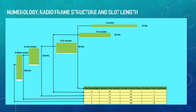The number of symbols per slot will be the same for all numerologies — that is 14 for configuration 0, as already discussed. However, the number of slots in a frame will change: 10, 20, 40, 80, and 160 respectively. Likewise, the subframe numbers will also change: 1, 2, 4, 8, and 16.